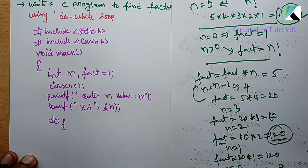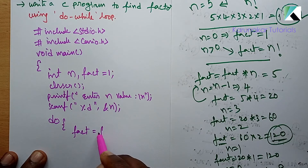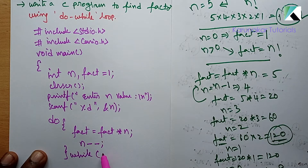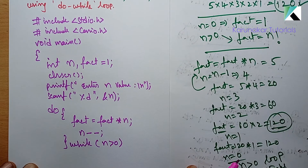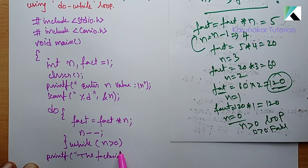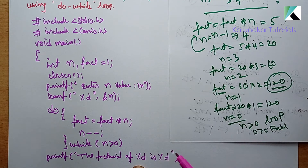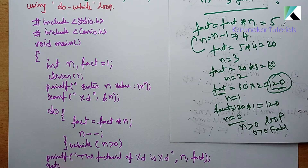We need to find the factorial of n. So ask the user. Then we can read by using scanf function: percentage d, ampersand n, done. Then re-trace, after that the logic. With do-while: the logic is fact is equal to fact into n. Every time n needs to be decremented, so n minus minus. Check condition: while n greater than 0, loop should repeat. So n greater than 0, loop repeats. When condition becomes false, the final output is printed. Then printf: factorial of percentage d is percentage d. First percentage d place is n, whose factorial we find, that is n. The result percentage d, that will be in fact. Then getch, close.